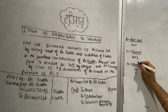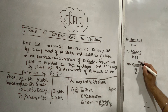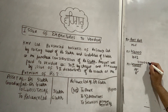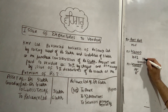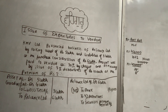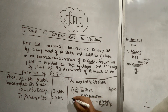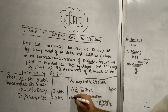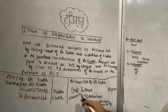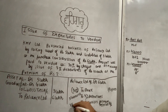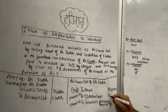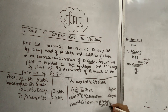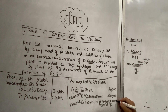So: 4,20,000 ÷ 12 = 35,000 debentures. Now for the journal entry: debentures at face value — 35,000 × ₹10 = ₹3,50,000. Securities Premium Reserve (SPR) — 35,000 × ₹2 = ₹70,000. Always record debentures at face value and SPR separately.